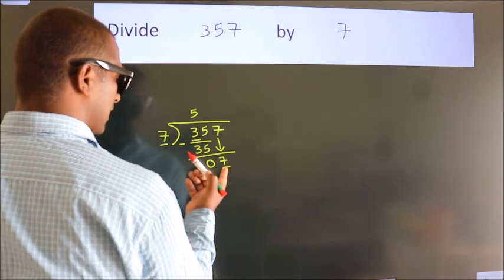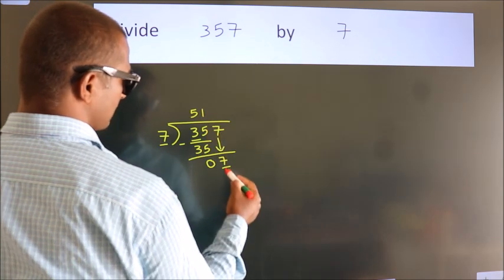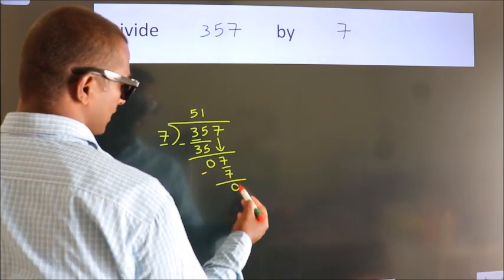So 7. When do we get 7? In 7 table. 7 once is 7. Now we subtract. We get 0.